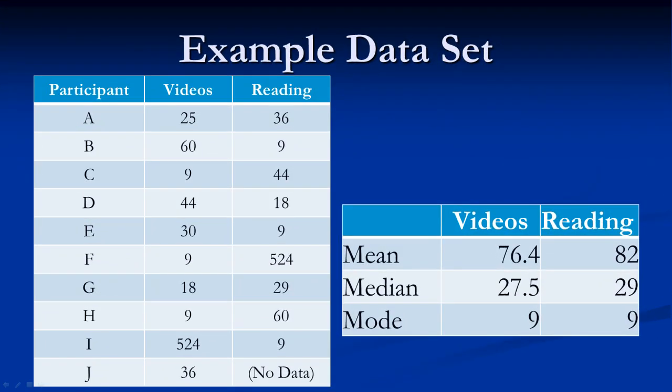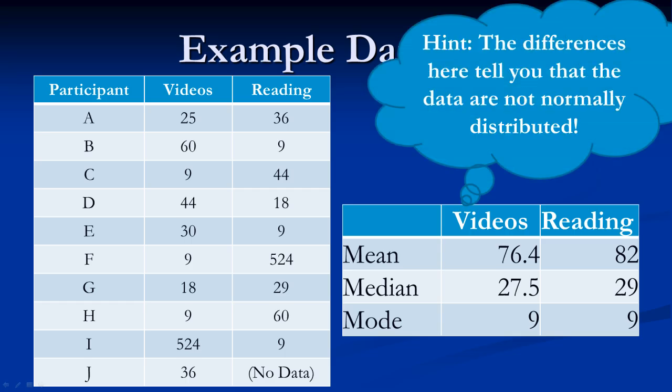Take a look at the data from our example. Which measure of central tendency most accurately represents this data? Is it the mean, median, or mode? They are all very different. Comment below with your answer and rationale. If you aren't sure, try watching this video again to pick out your rationale.